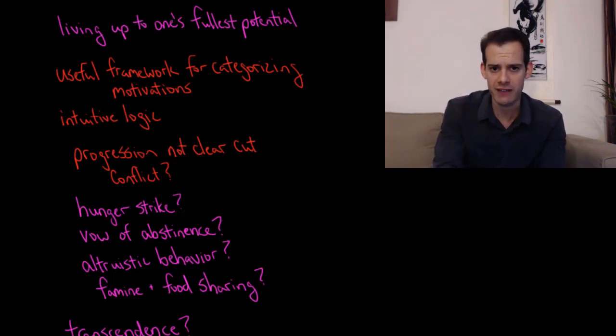So what should we make of Maslow's hierarchy? Well, one of the first points is I think it is a useful framework. There's many motivations for many different types of behavior and we're all facing all of these different motivations at once. And so it makes sense to group things and try to categorize these motivations. So I think it's useful to have a framework for doing that.